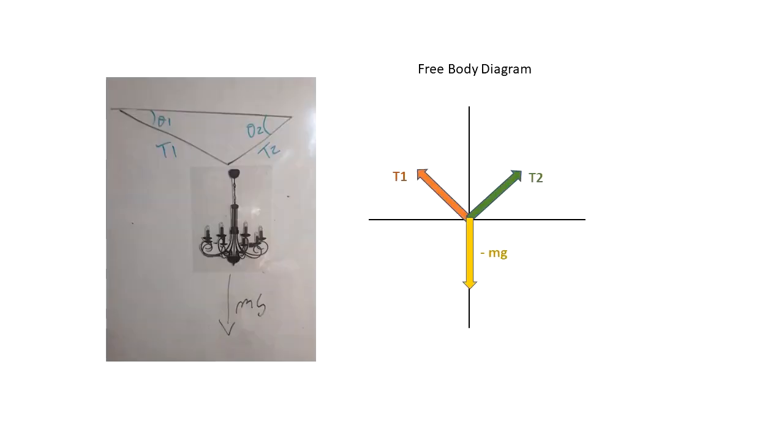On the left we can see the chandelier hanging from the ceiling. We have T1 angle theta1 and T2 that has an angle of theta2 with the ceiling. On the right hand side we have the free body diagram that has all the forces acting on the connection point of the cables and the chandelier.